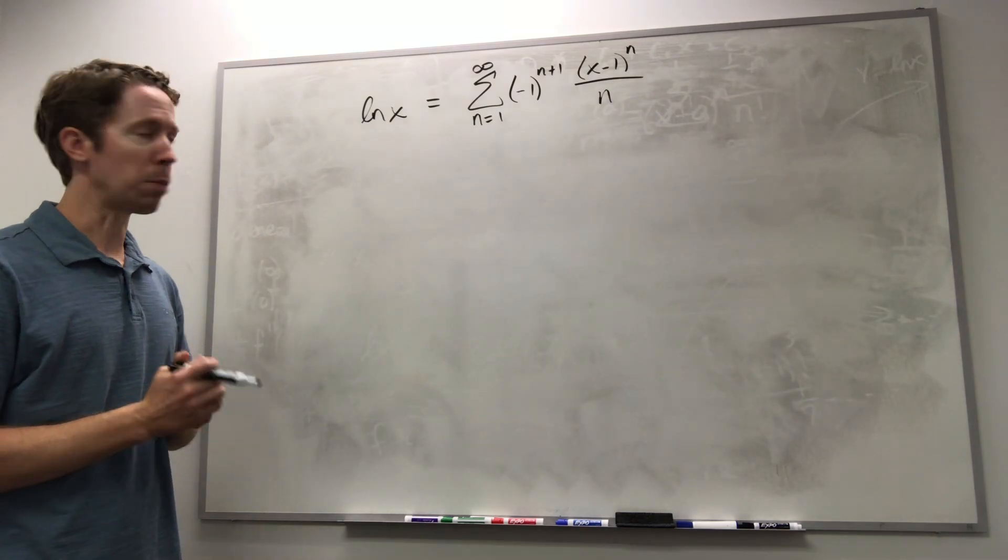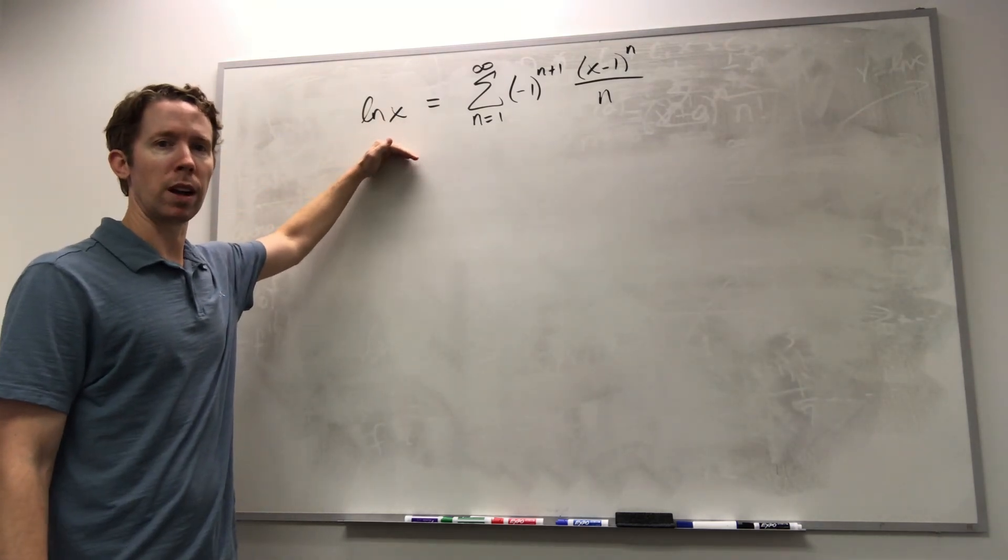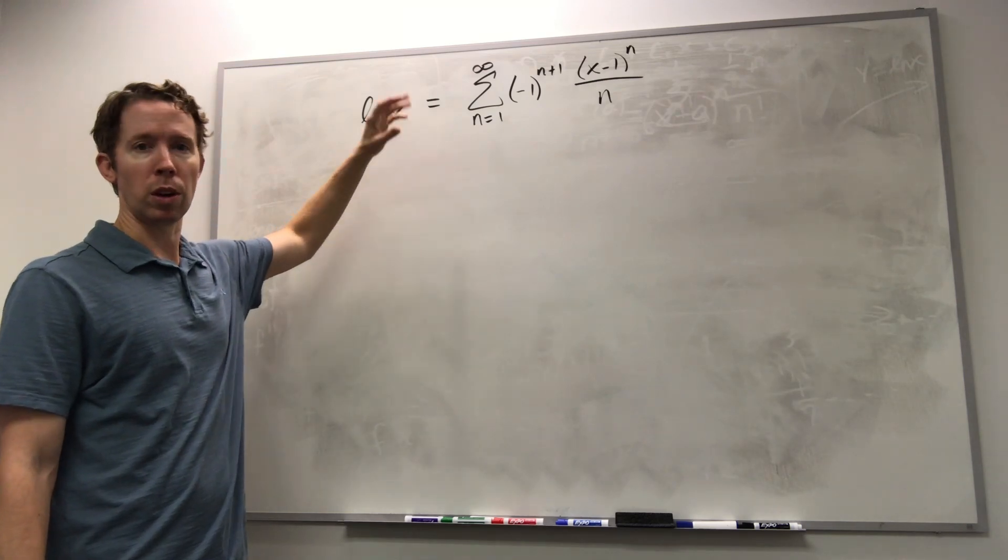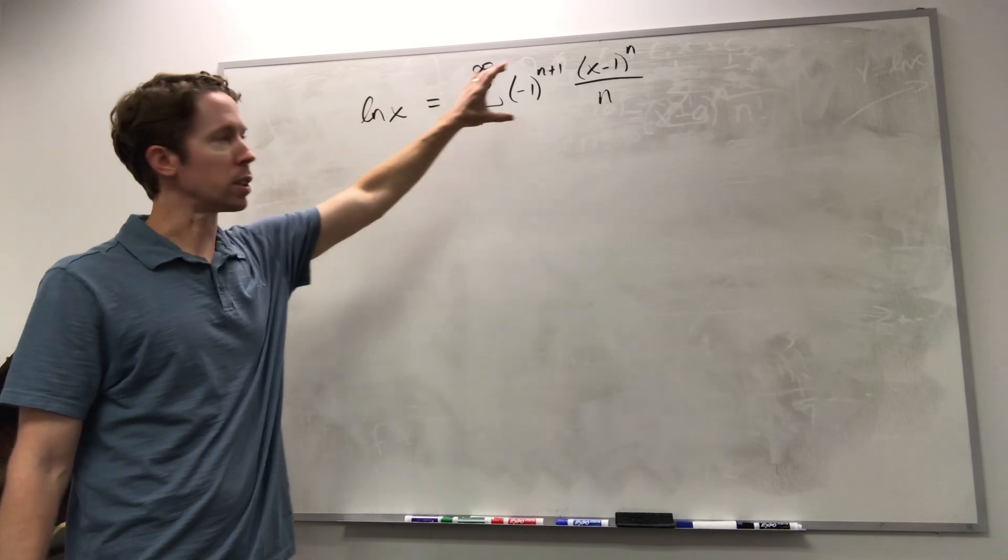I want to look at the example natural log of x. If I take the Taylor series of natural log of x centered at x equals zero, so I go through the derivatives, I plug in x equals zero, this is the series that I get.